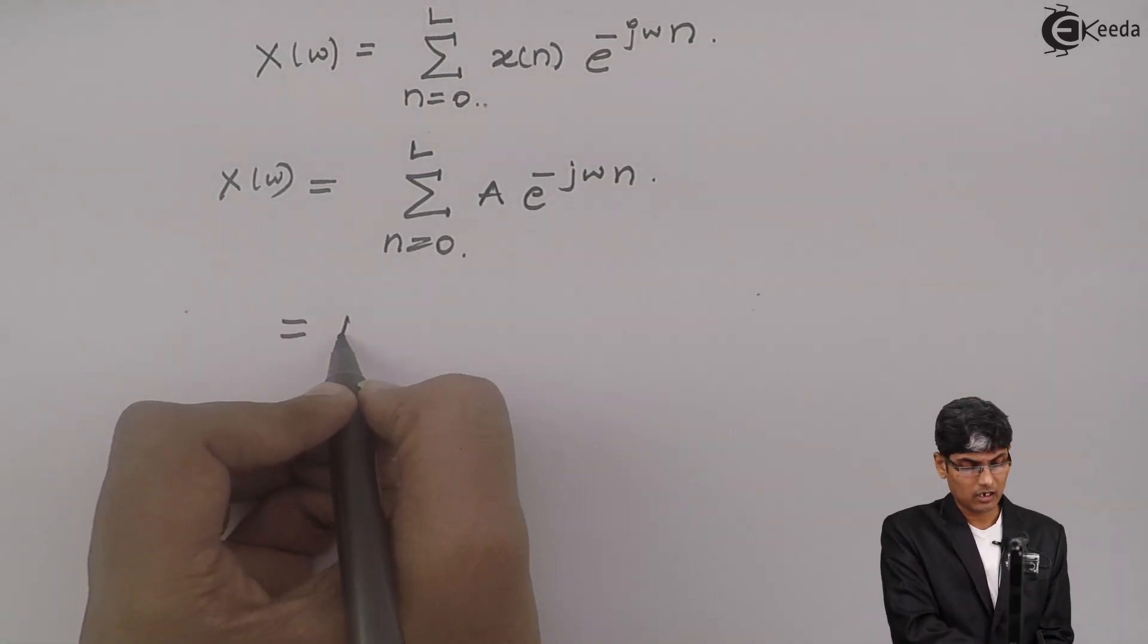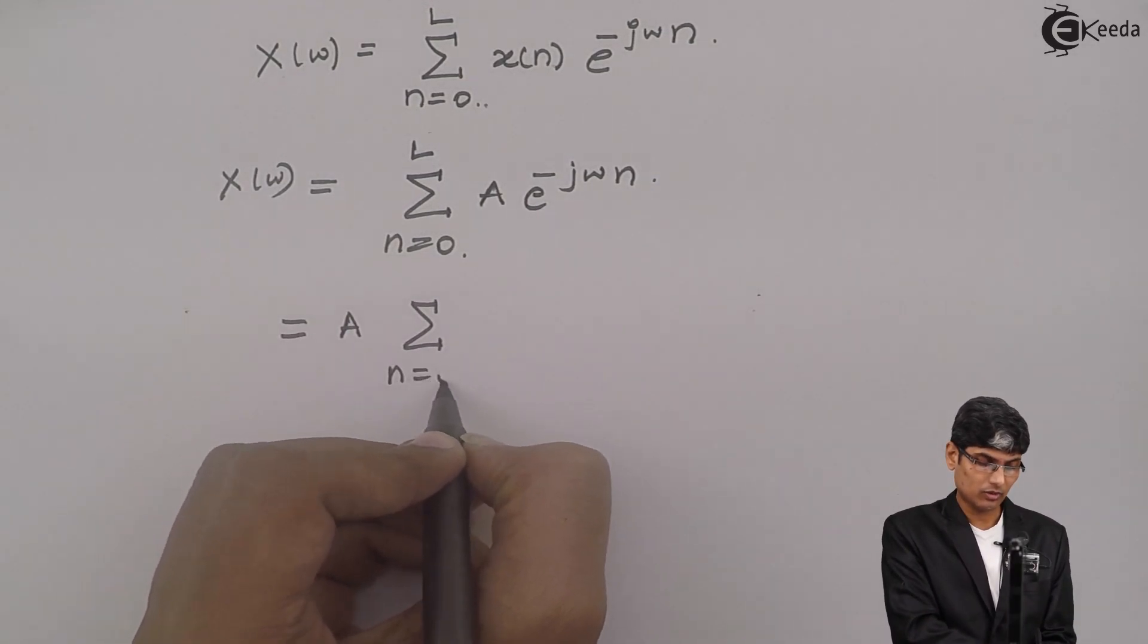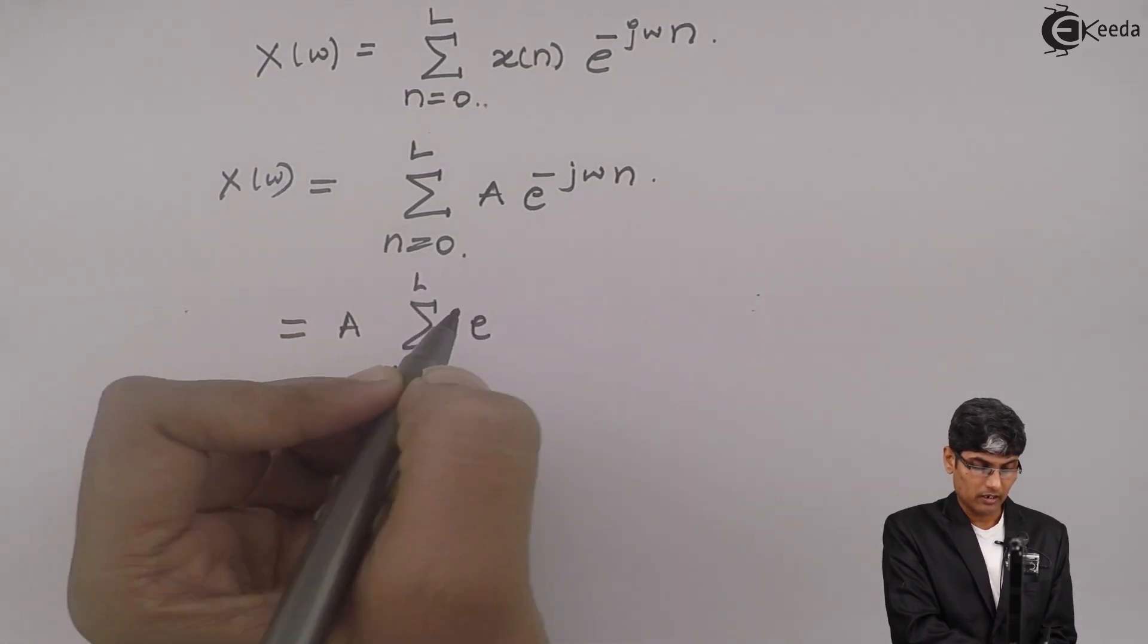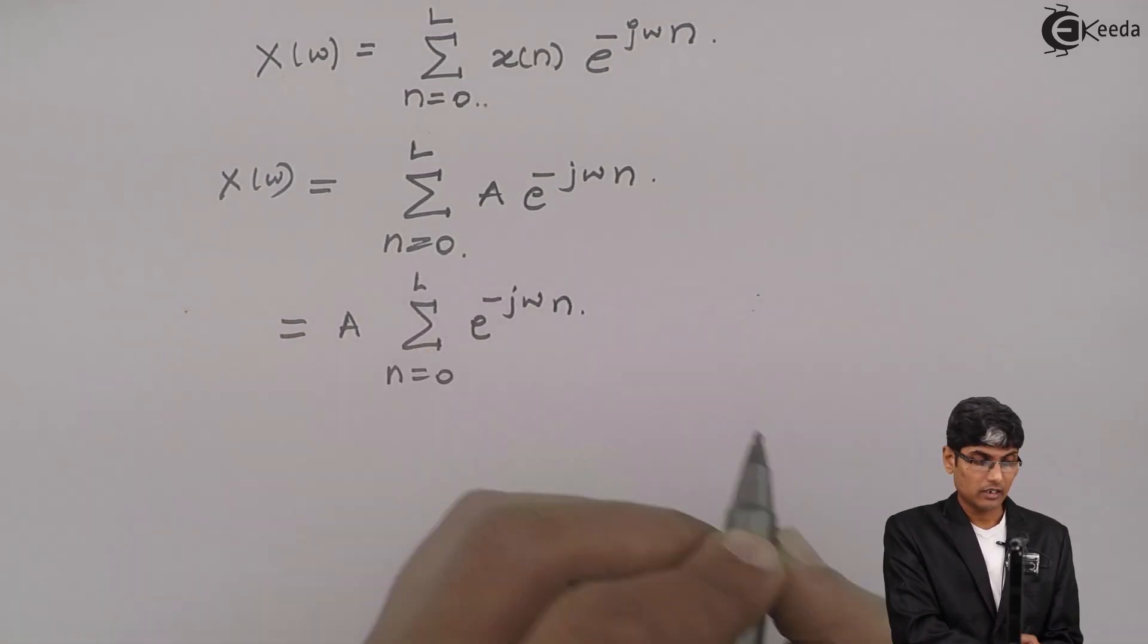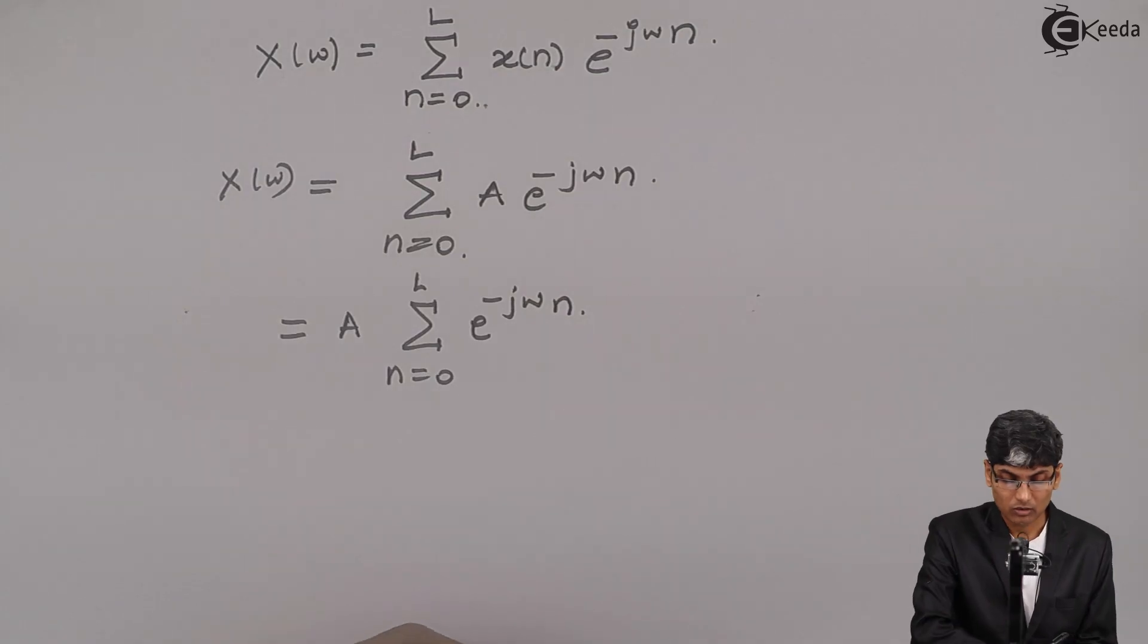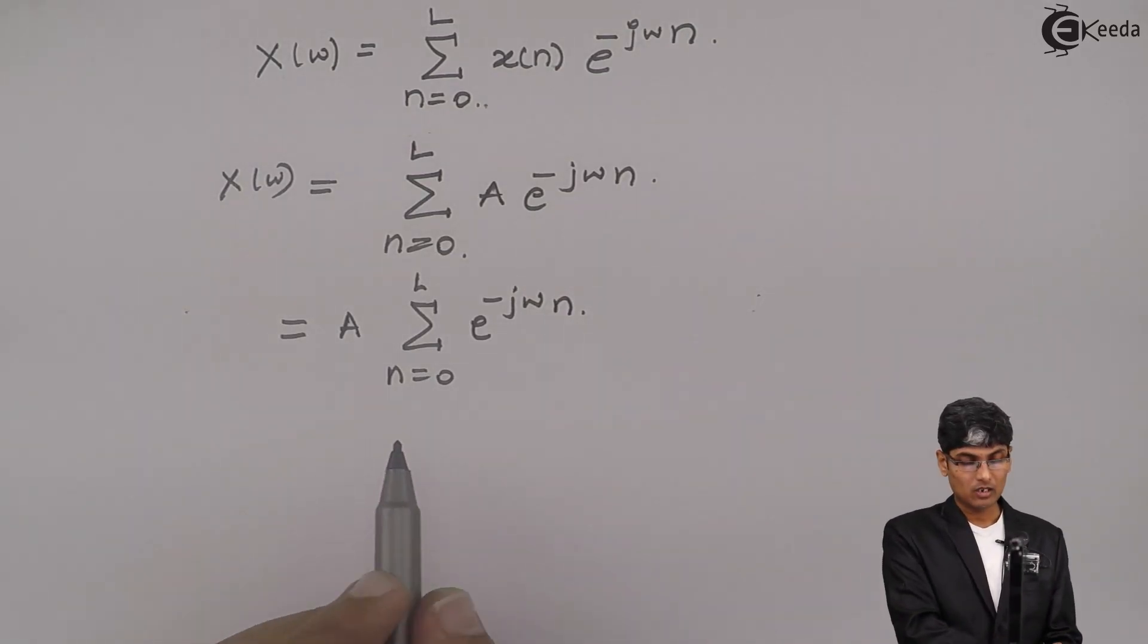We put A outside: A times summation n goes from 0 to L, e^(-jωn) is what we got as a sequence. This is a finite series.